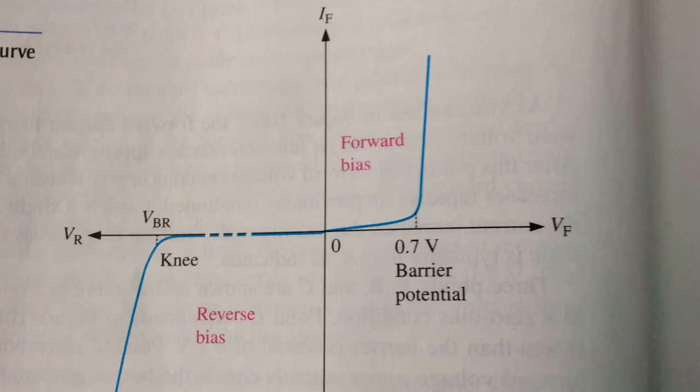As previously mentioned, there is a slight increase in VF above 0.7V as the current increases too, mainly due to the voltage drop across the dynamic resistance. When a reverse bias voltage is applied across a diode, there is only an extremely small reverse current through the P-N junction.